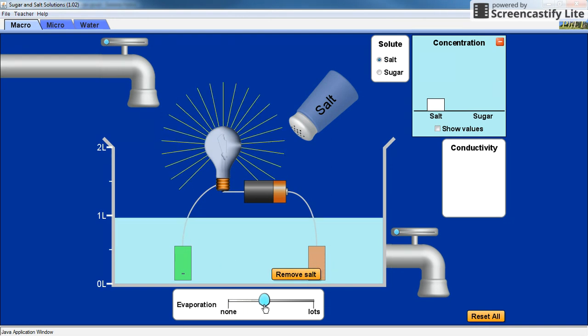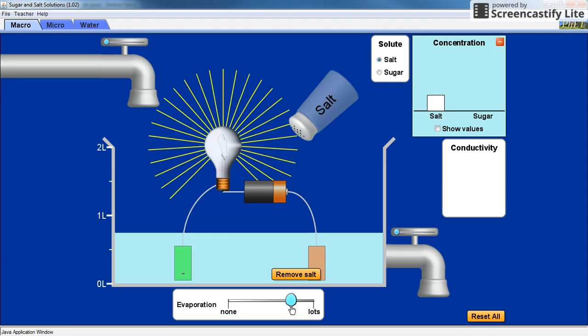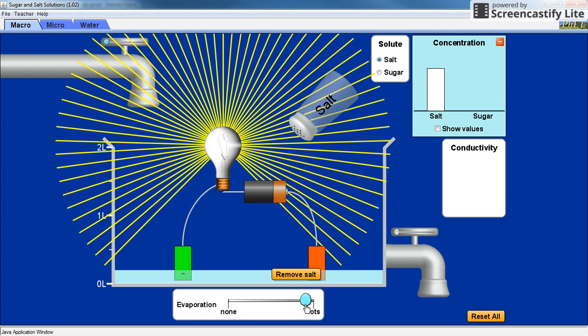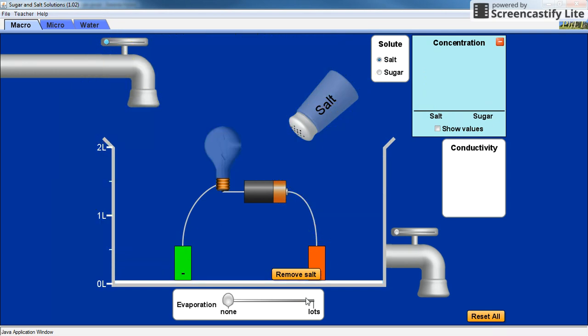If I evaporate the water, look at the concentration and the brightness. Is there a relationship? And if I evaporate all the water, suddenly there is no light bulb glowing. Why is it not glowing? What is now not happening down here to complete the circuit?